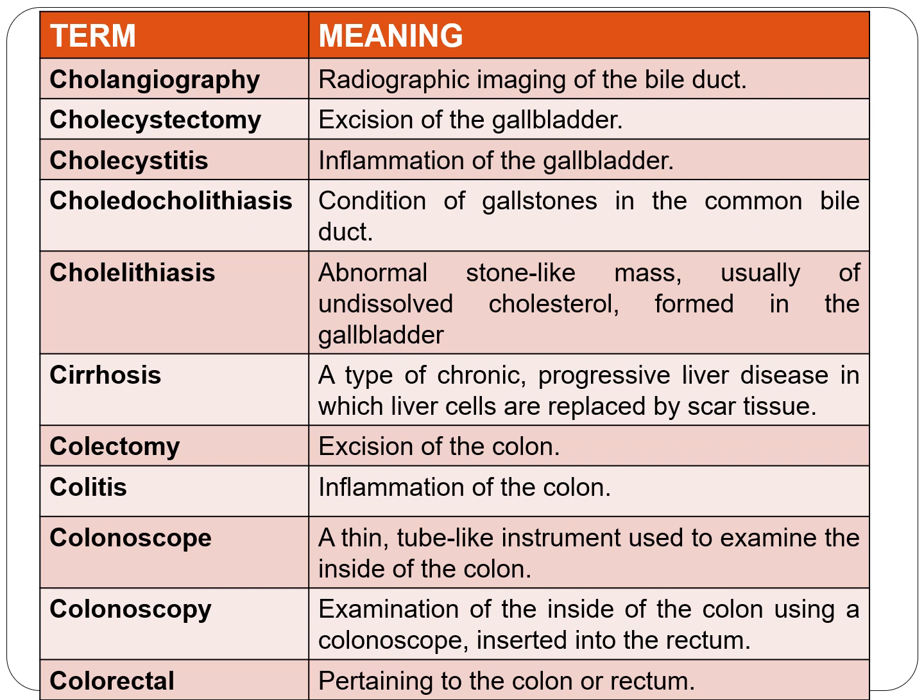The next term is cirrhosis — a type of chronic progressive liver disease in which the liver cells are replaced by scar tissue. Next is colectomy — 'ectomy' means surgical removal — so colectomy is the excision of the colon. Colitis is inflammation of the colon.